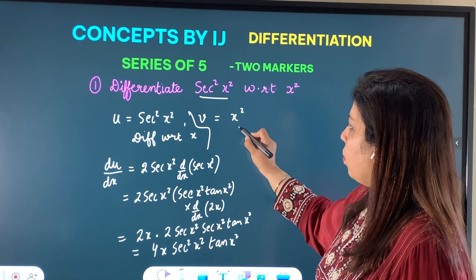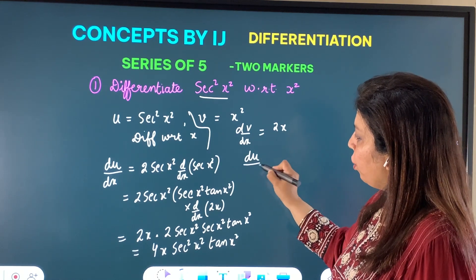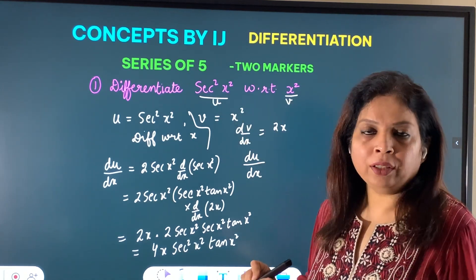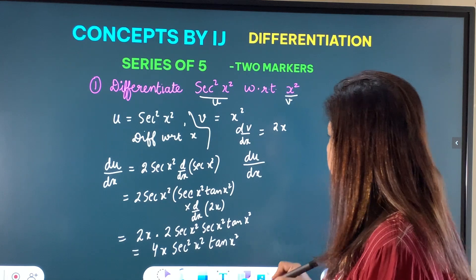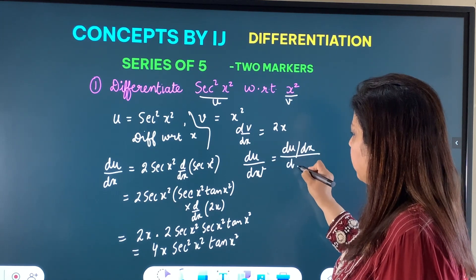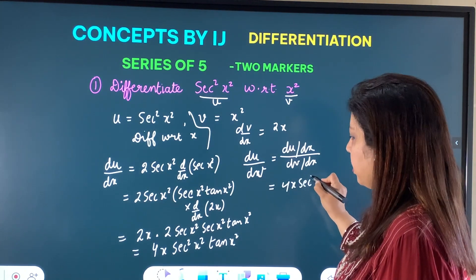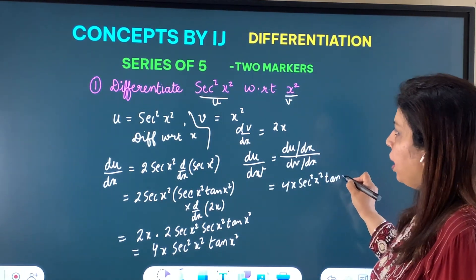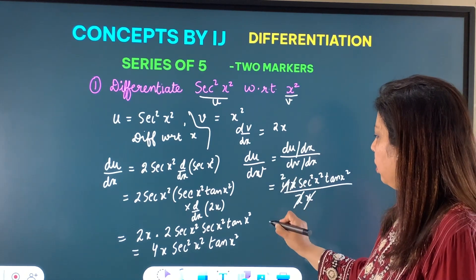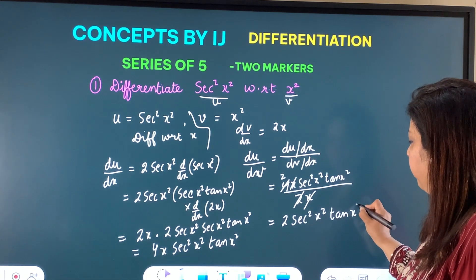v = x², so dv/dx = 2x. When we find du/dv — since we need the derivative of u with respect to v — it equals du/dx divided by dv/dx. du/dx is 4x sec²(x²) tan(x²), and dv/dx is 2x. The x cancels, 4/2 = 2, so the answer is 2 sec²(x²) tan(x²).